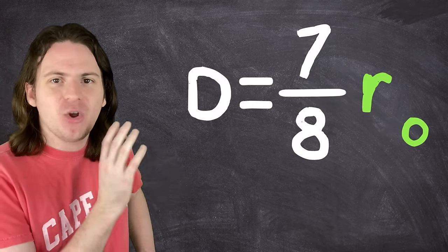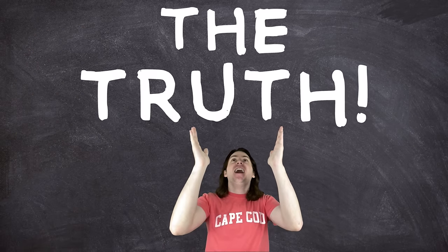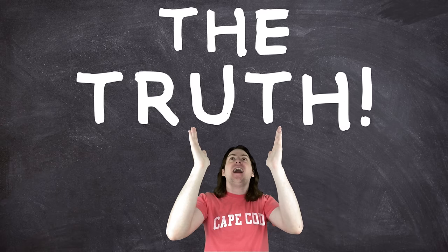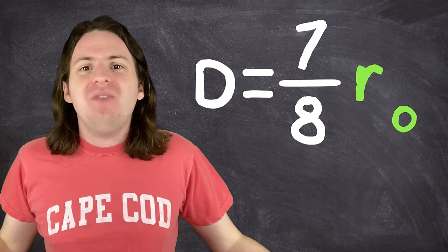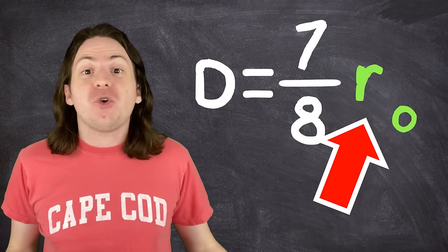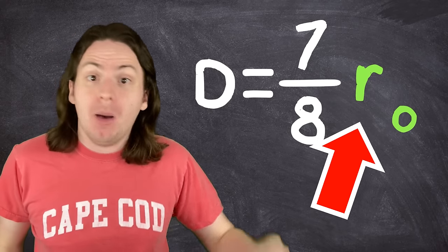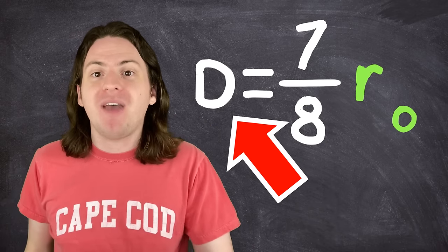So now we find that the depth of the nether is equal to 7 eighths the radius of the Minecraft world. And just like that we've got ourselves a dead simple equation. Take whatever radius of the overworld you want, multiply it by 7 eighths and you've got the depth that the nether would have to be for one block down there to equal 6 blocks on the surface.